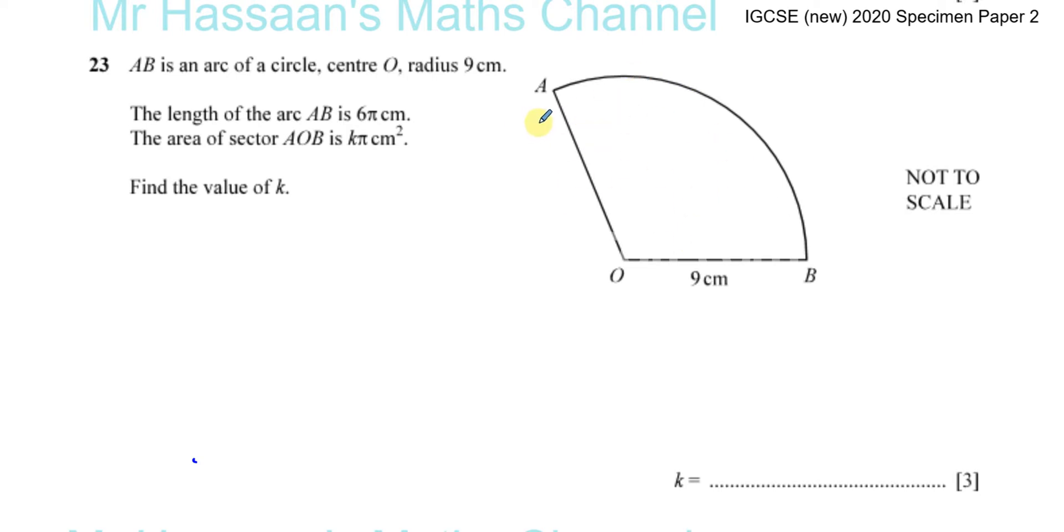Basically, they're saying find the area of the sector in terms of π and write down what number is next to π. To find the area of a sector, we need the following formula.